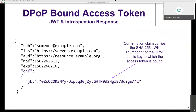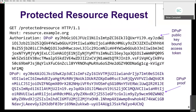For both JWT-based tokens and tokens accessed via introspection, we define 'jkt' — the SHA-256 JWK thumbprint of the public key — which binds the access token to the client's public key asserted through the DPoP proof. This could also be done via a database lookup internally, but we've focused on defining pieces needed for interoperability, either in a JWT or via an introspection response.